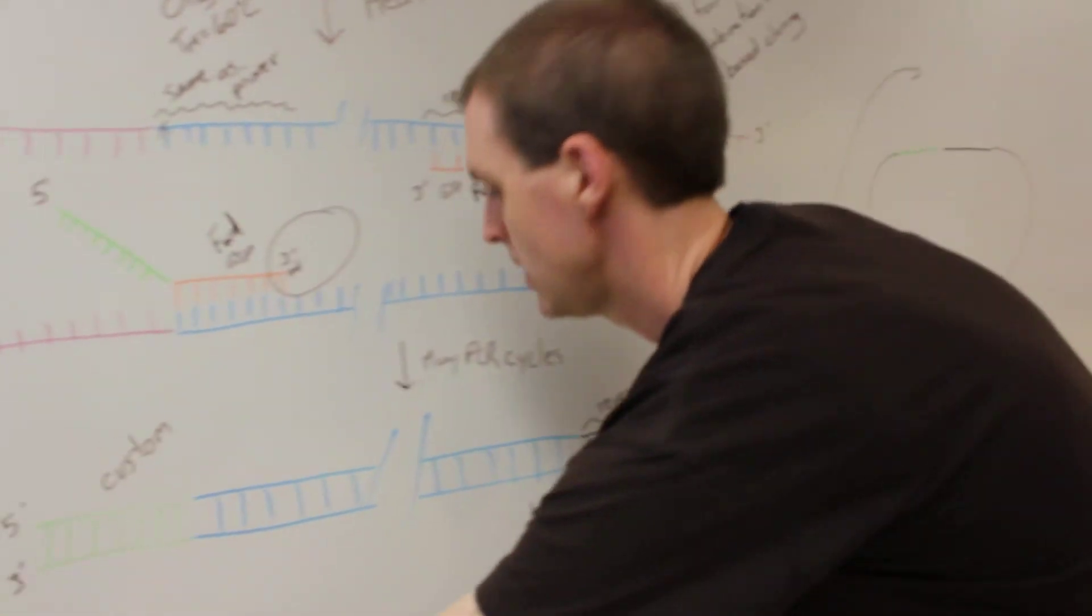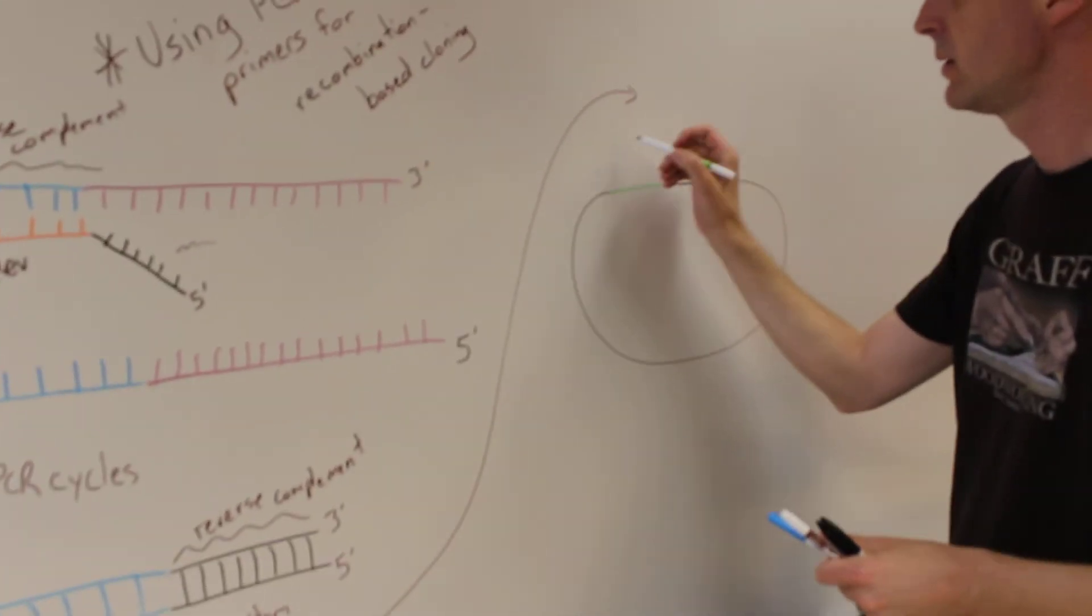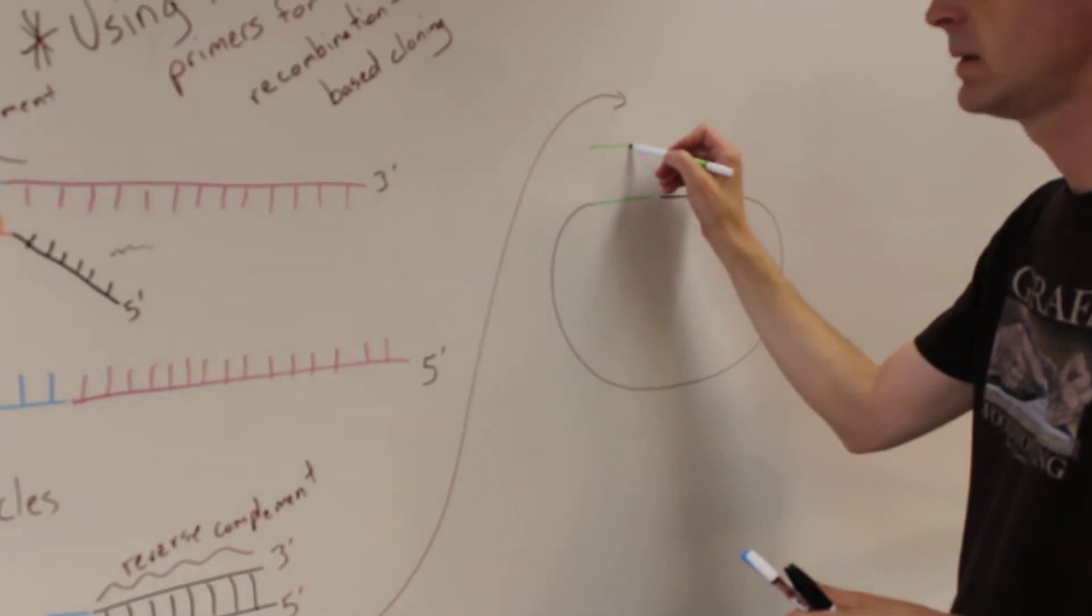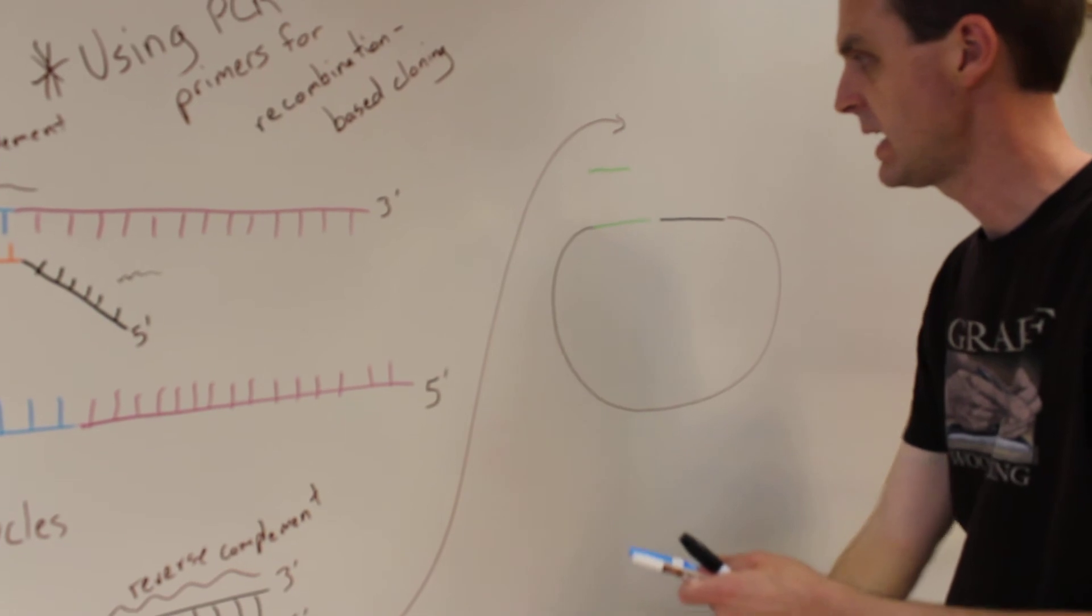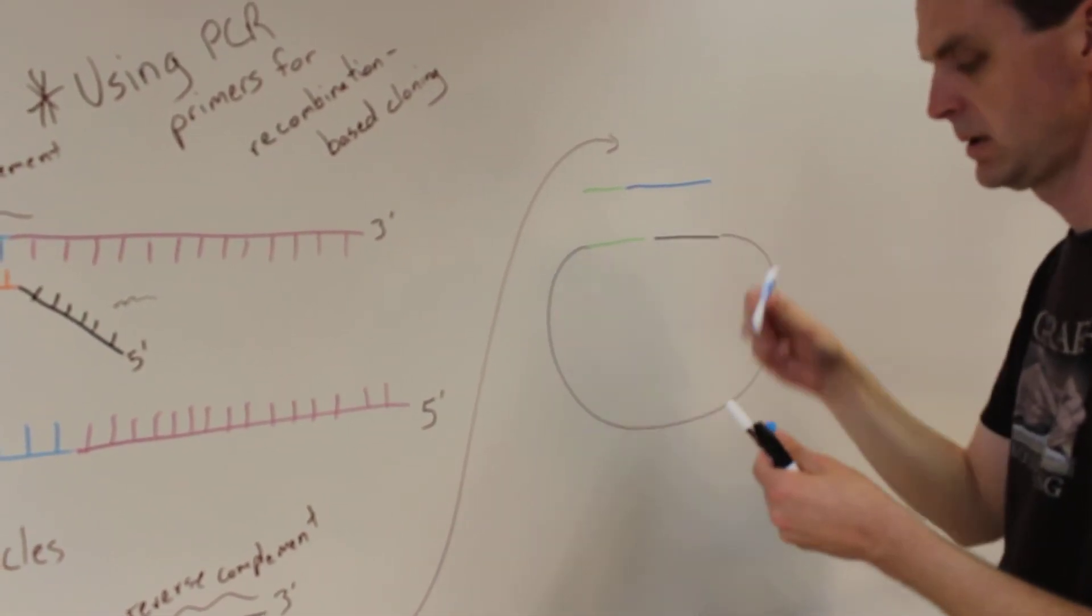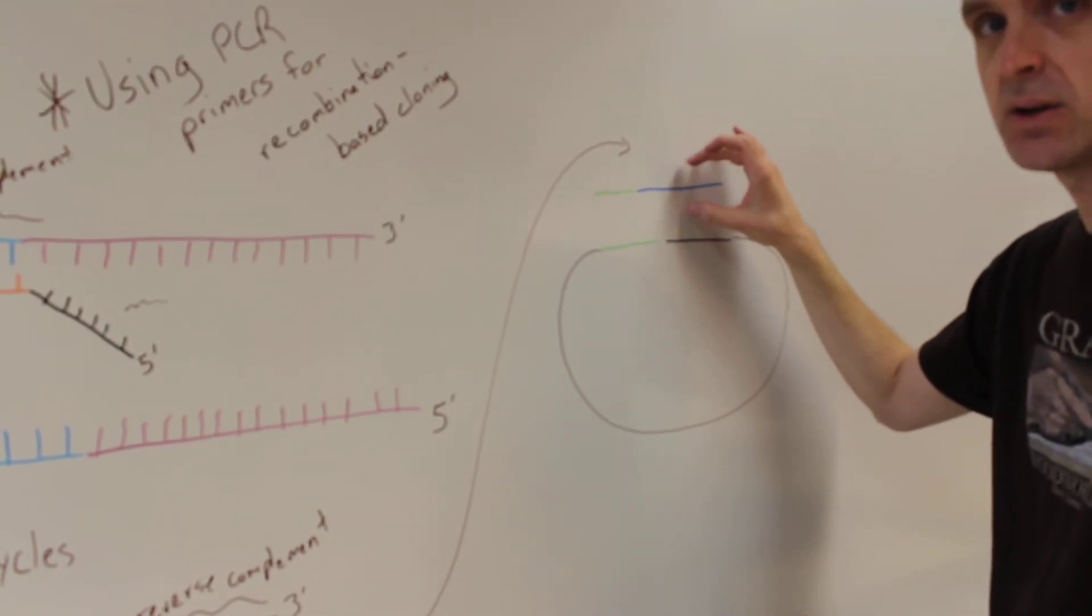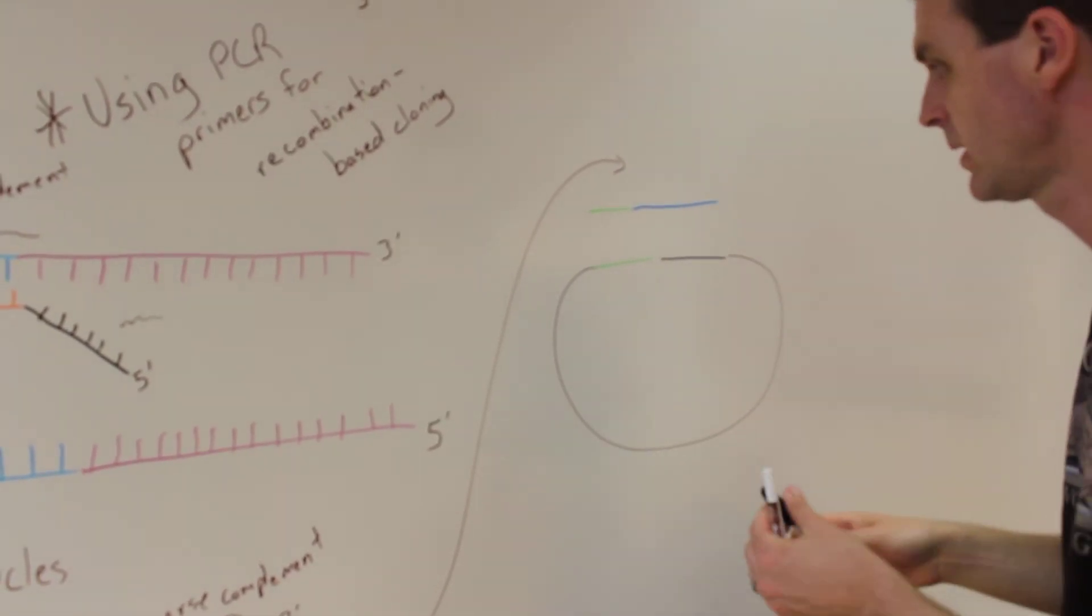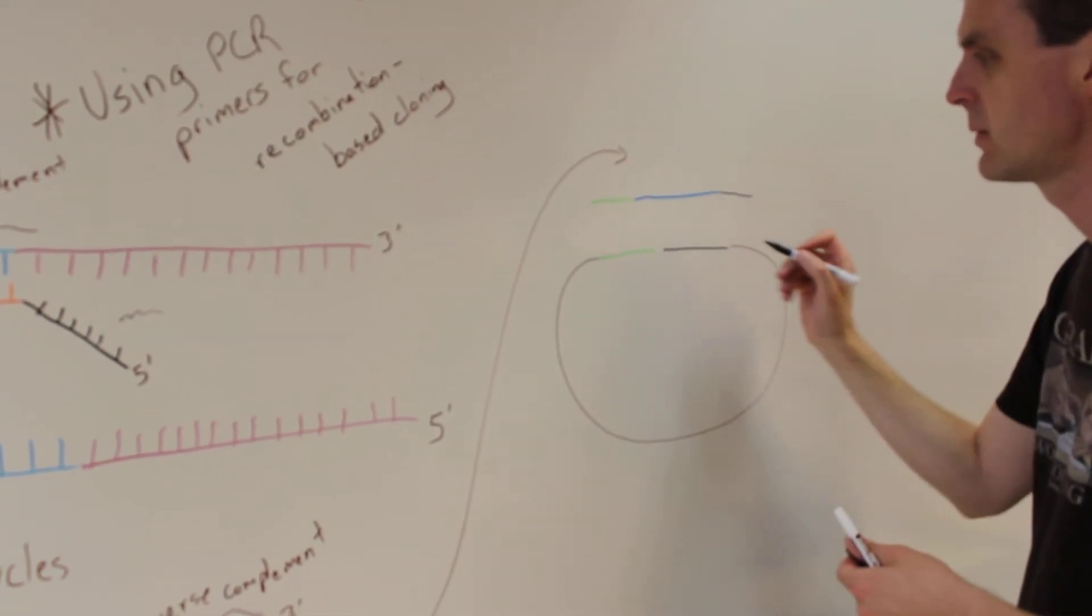I'm only going to draw a single-stranded here, but you'll have your green sequence, followed by your PCR product sequence, followed by the gene or whatever it is you're trying to amplify sequence for cloning, and then it'll end with the custom black sequence.